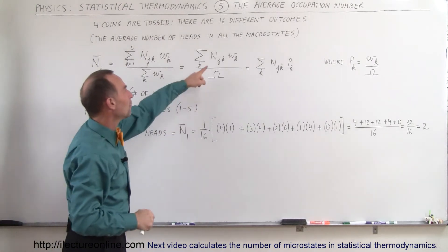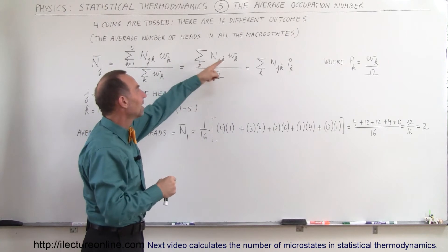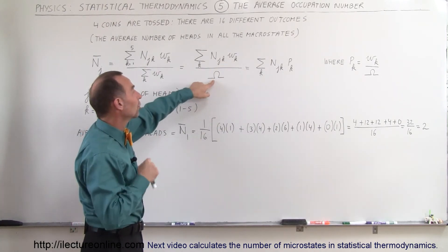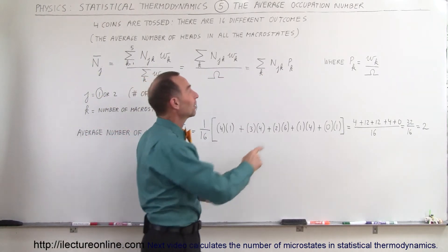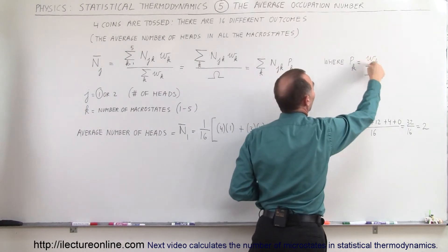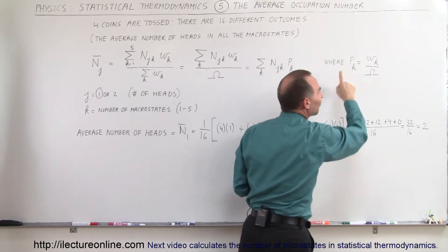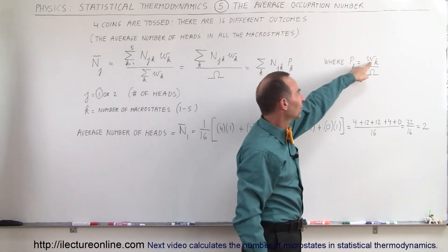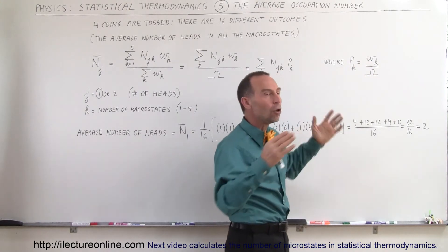What we do here is multiply the number of coins that have heads in each microstate times the probability that that microstate will occur, divided by the total number of outcomes. This can also be written in another form, because the probability for each macrostate is equal to the number of outcomes of that macrostate divided by the total number of outcomes of all the macrostates.